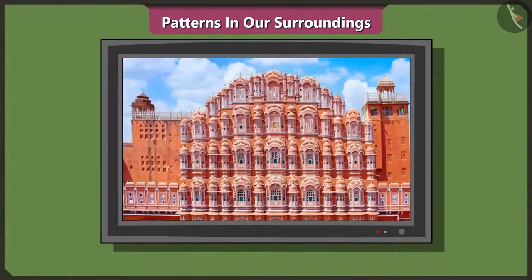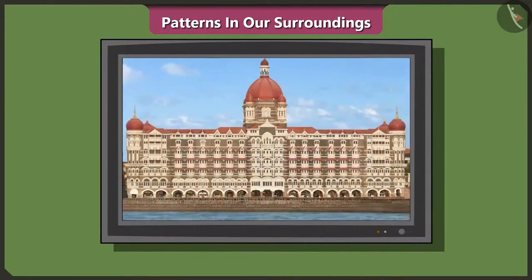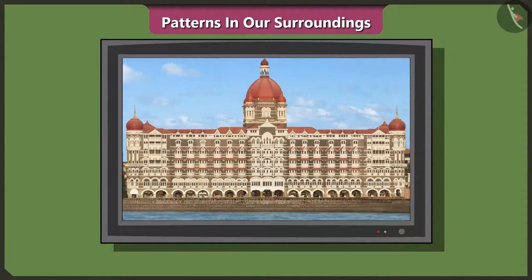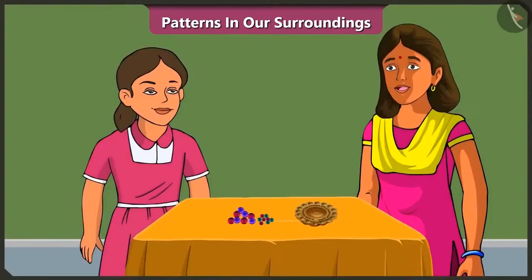Vinny, please turn on the TV. Hey mummy, is there a pattern on this building as well? Yes, this building is the Hawa Mahal at Jaipur in Rajasthan. And this is the Taj Hotel in Mumbai. Mummy, these patterns on these buildings make them look so beautiful. Beautiful reminds me of decorating the Diyas. I have to take them to school tomorrow. Let me help you. Look, there are some similar patterns on these Diyas as well.